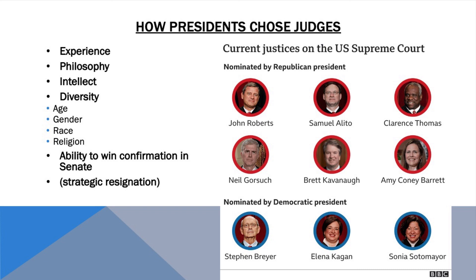Presidents may use judicial nominations to demonstrate a commitment to diversity as well, looking to qualities such as gender, religious affiliation, and ethnic background. Presidents are also likely to put forward relatively young nominees, thereby influencing judicial decision-making for decades after their personal terms in office have expired. In addition, presidents weigh the ideology and judicial philosophy of prospective nominees, favoring those who have a record of upholding policies that reflect the president's own values. If a president believes in a literal interpretation of the Constitution, they will be more inclined to nominate judges who share that value.